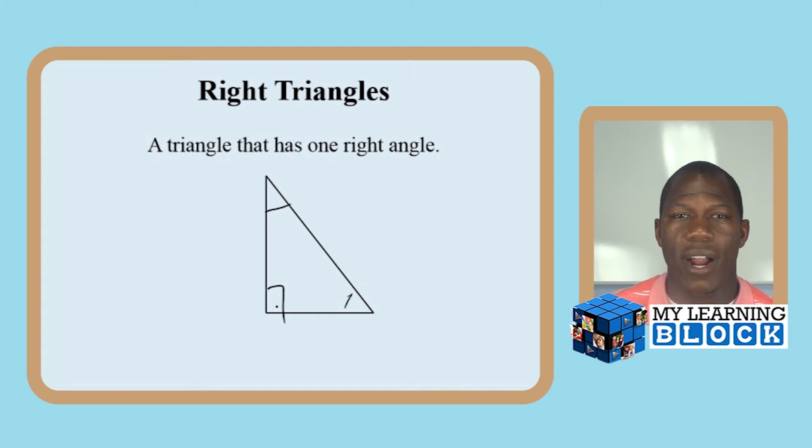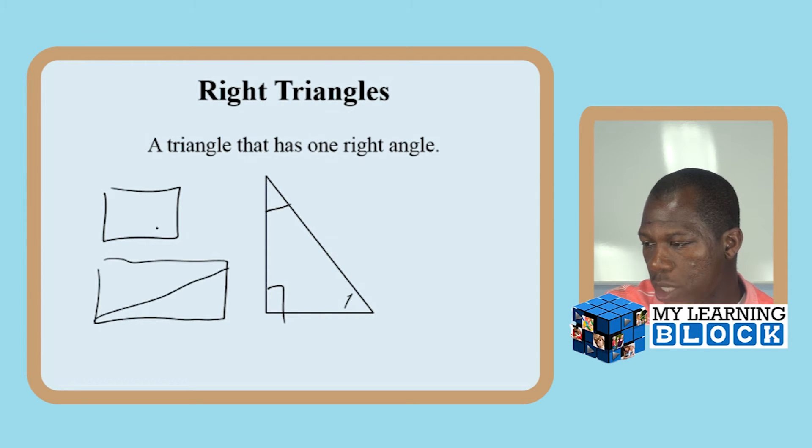If you take an object such as a square or rectangle and you cut them in half, you will form two right triangles. A right triangle is just one half of a square or a rectangle.